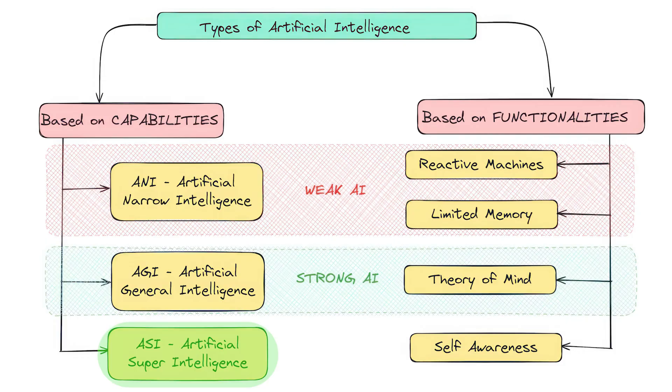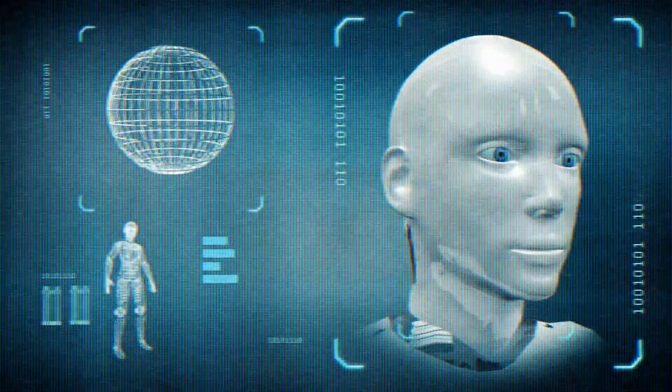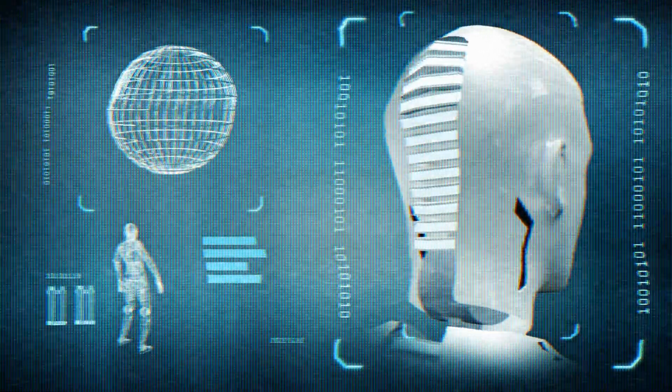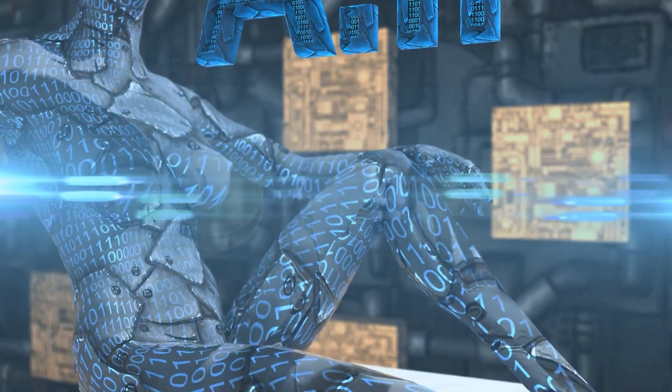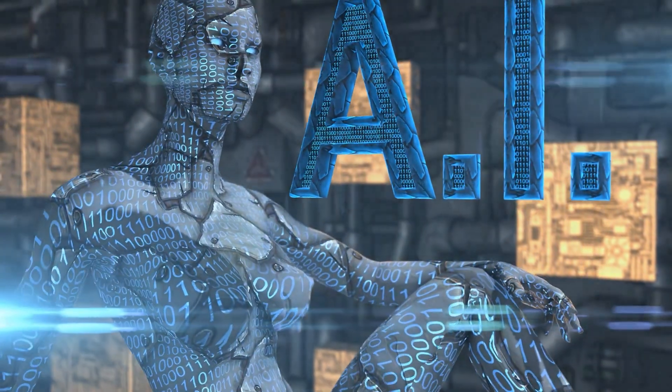If AGI is frightening you, wait for the next one — which is ASI, Artificial Super Intelligence. If at all ever realized, ASI will be smarter than humans at everything. They'll have their own needs, their own desires, their own emotions, and they'll be masters of their own destiny. Basically, they will be beyond our control and our understanding. Thankfully, we are nowhere close to realizing ASI. Now, let's look at the four types of AI based on functionalities.